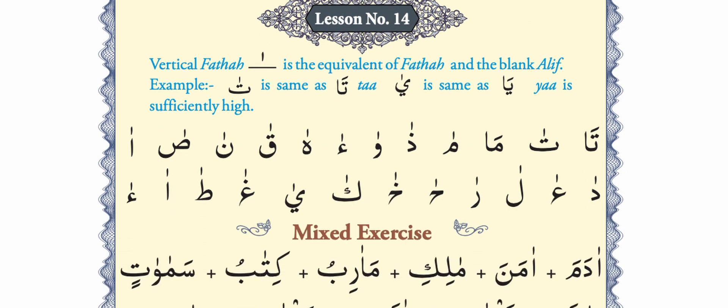Let us go to lesson number 14 where vertical fatha practice is given. The first example is written as 'ta fatha and blank alif,' so it is read the same way we have already learned. The vertical fatha is read exactly the same way: ta, ma, ma, ma, tha, wa, a, ha, ha, qo, na, saw.